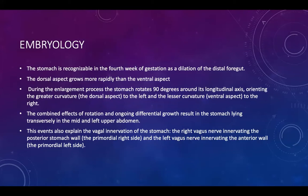Regarding embryology, the stomach is recognized in the fourth week of gestation as a dilatation of the distal foregut. There is differential growth of the gastric wall where the dorsal aspect grows more rapidly than the ventral aspect. The stomach then rotates around its own longitudinal axis by 90 degrees, orienting the greater curvature — the dorsal aspect — to the left, and the lesser curve — the ventral aspect — to the right, giving the stomach its normal anatomical shape, lying transversely in the mid and left upper abdomen.